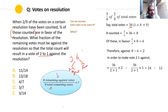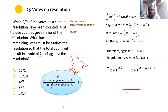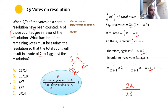Eventually 24 votes need to be against. What fraction of the remaining votes must be against? Total votes are 36, 8 have been counted, so 28 votes remain. We already have 2 against votes and need 24 total against, so we need 22 more. The fraction is 22/28, which simplifies to 11/14. The answer is A.